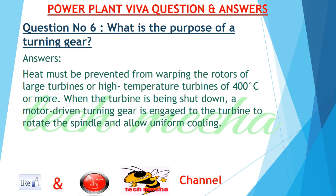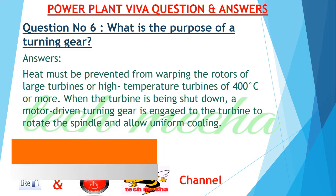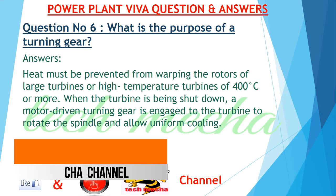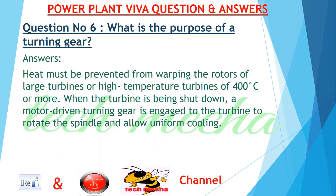Question number 6: What is the purpose of a turning gear? Answer: Heat must be prevented from warping the rotors of large turbines, or high-temperature turbines of 400 degrees centigrade or more. When the turbine is being shut down, a motor-driven turning gear is engaged to the turbine to rotate the spindle and allow uniform cooling.